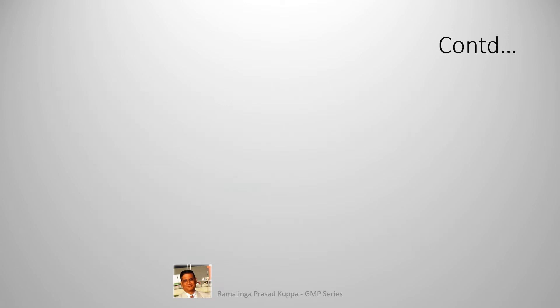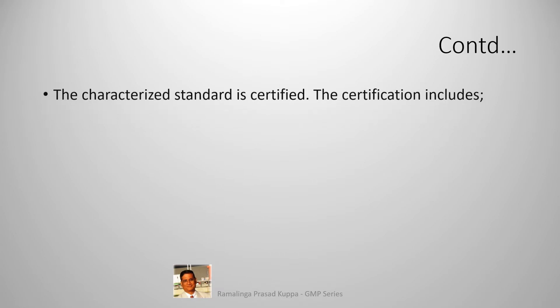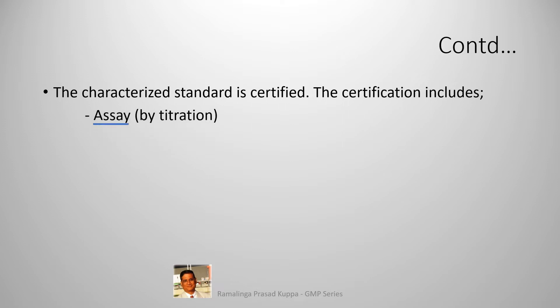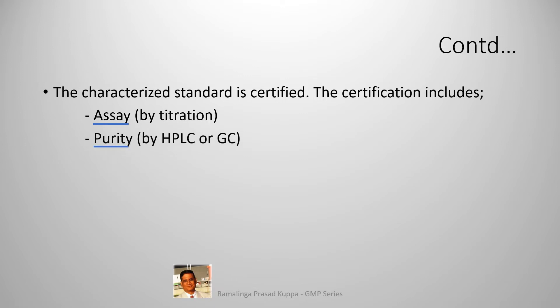The second part of primary standard handling is certification. The characterized standard is certified. The certification includes assay by titration. Assay determines the content of the active compound in the reference standard. Generally, this is done by titration if there is an established method. Purity is evaluated by HPLC or GC. Purity is qualitative purity, and this evaluation is generally done by HPLC or GC.